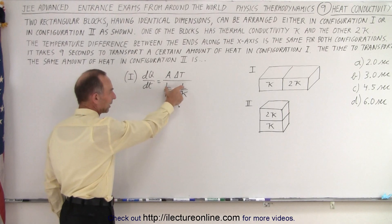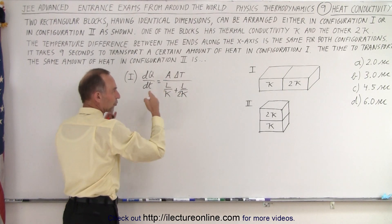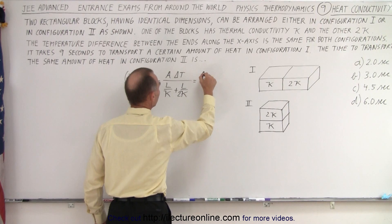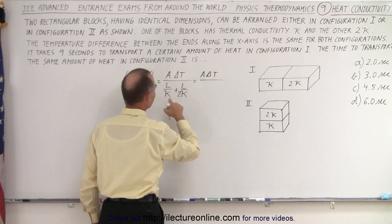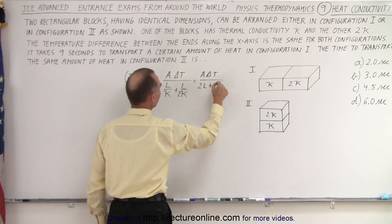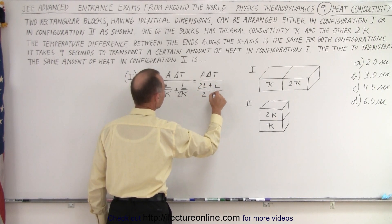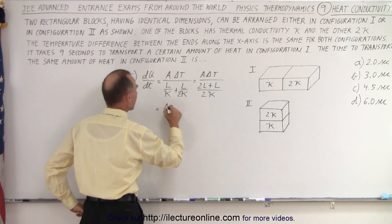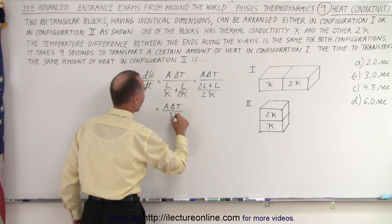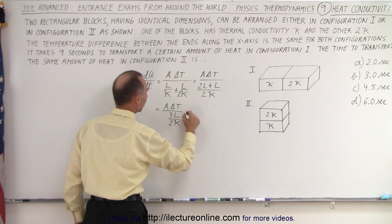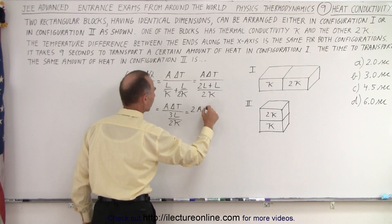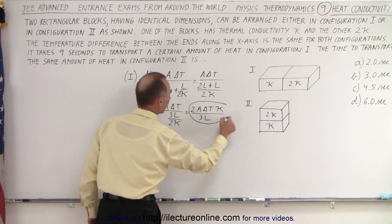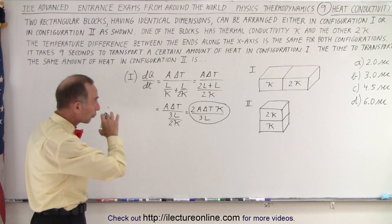Notice they both have the same length, same cross-sectional area, and delta T is the total temperature difference. In the denominator, we find the common denominator: we write this as A times delta T divided by (2L plus L) over a common denominator of 2K. This simplifies to 2A·delta T·K divided by 3L. So this is the rate of heat flow through configuration 1.